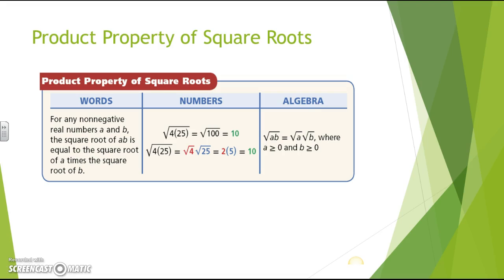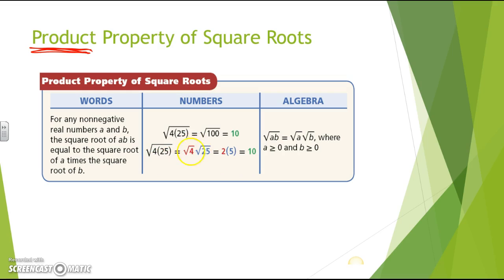There are a few properties in this section. The first one is the product property of square roots. Product means that you are multiplying and getting the answer. For any non-negative real numbers a and b, the square root of a times b is equal to the square root of a times the square root of b. In number form, the square root of 4 times 25 is the square root of 100, which is 10. Alternatively, the square root of 4 is 2, and the square root of 25 is 5, giving you 10.